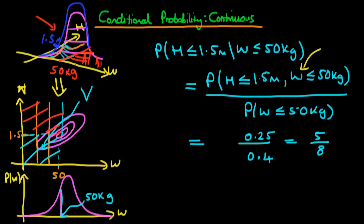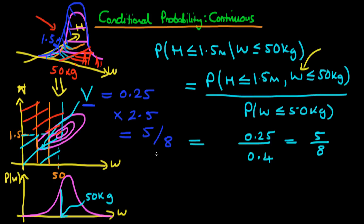Either way we get the same answer, because the renormalization factor — the amount we shift the shape up — is one over 0.4, which is 2.5. So we just work out our original integral and multiply by 2.5. The original volume from our contour plot is 0.25, and multiplying by the renormalization factor of 2.5 gives the same conditional probability answer of 0.625 in this particular example.